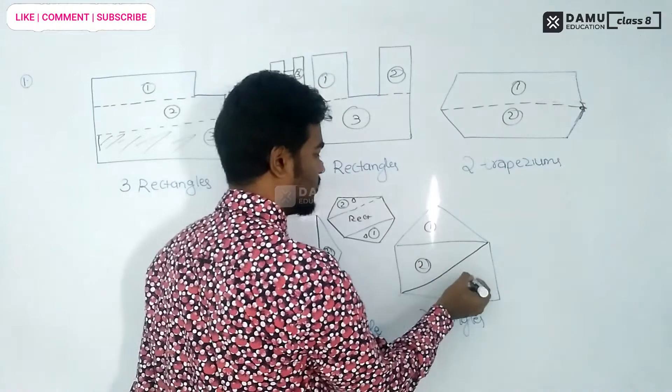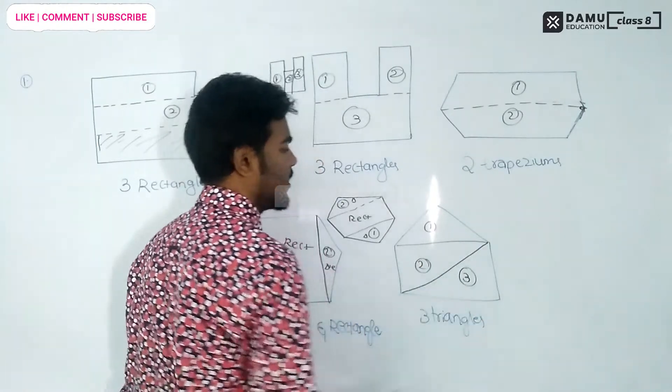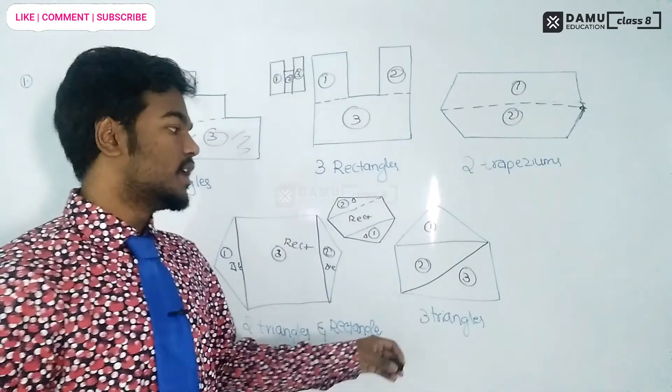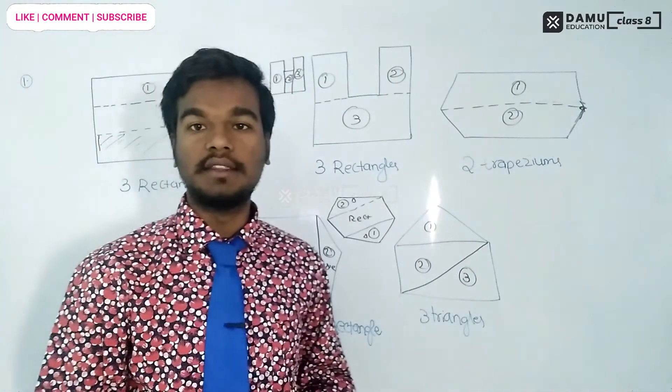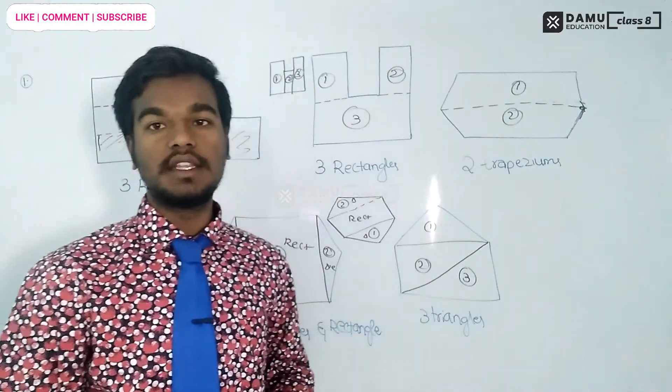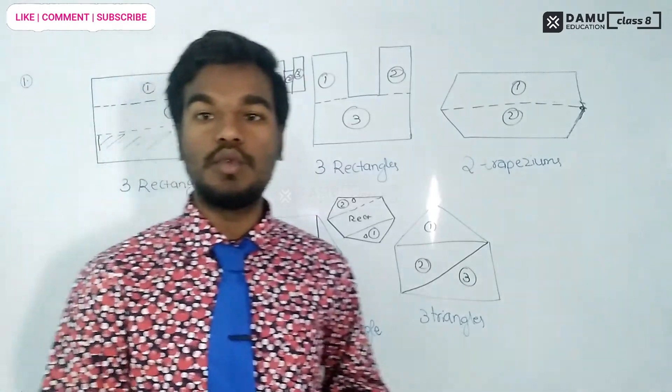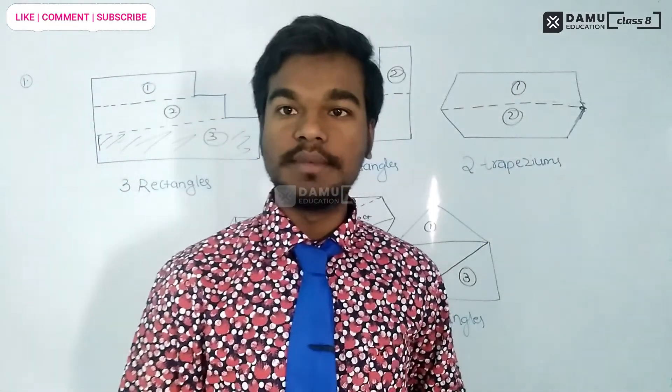Then three triangles. Take one triangle, then divide it — this is second, this is third triangle. You can divide like this with the given shapes. Thanks for watching, please subscribe.